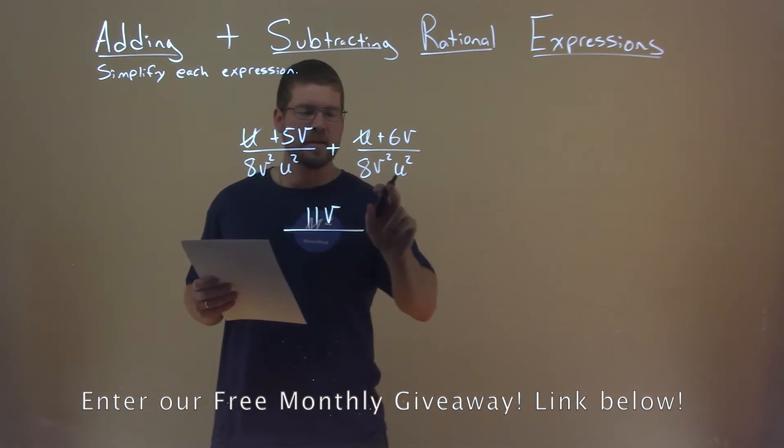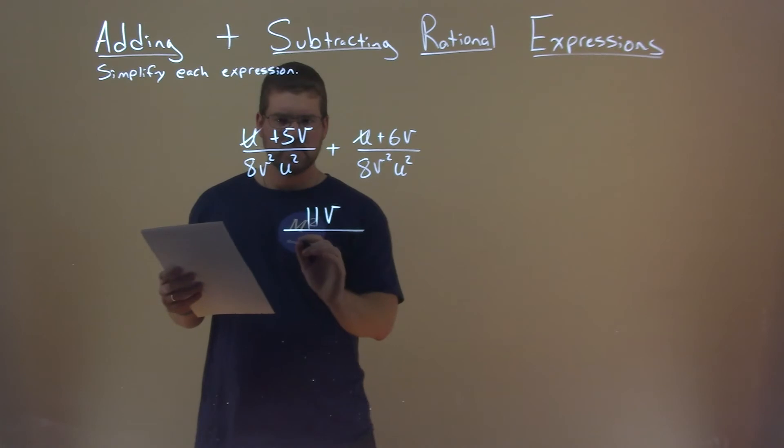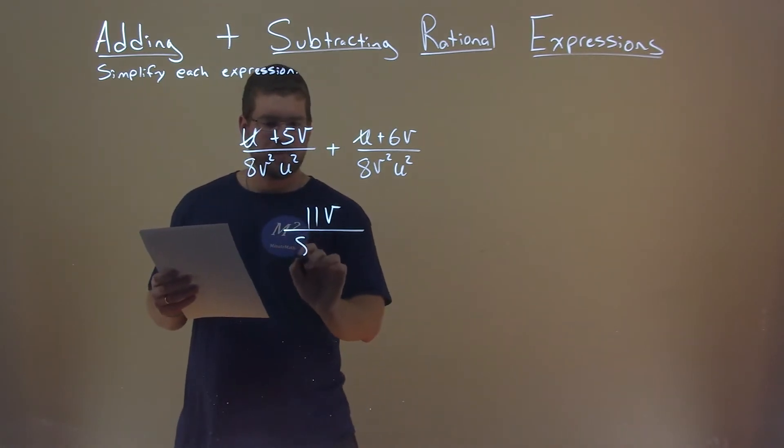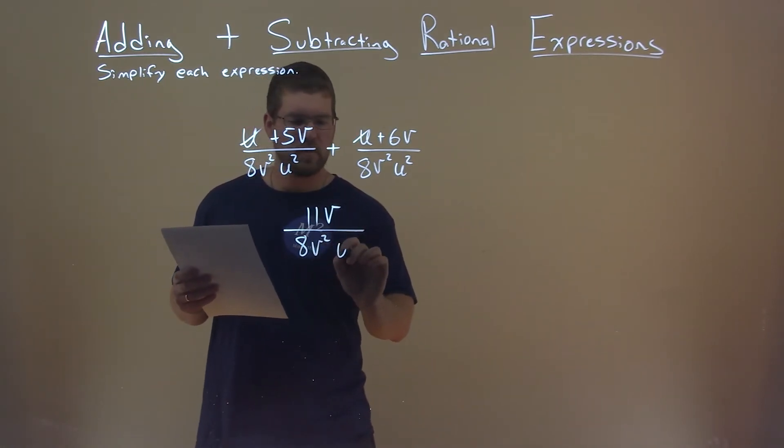The denominator, since it was the same, we can add those fractions. We just keep that one denominator here. 8v squared u squared.